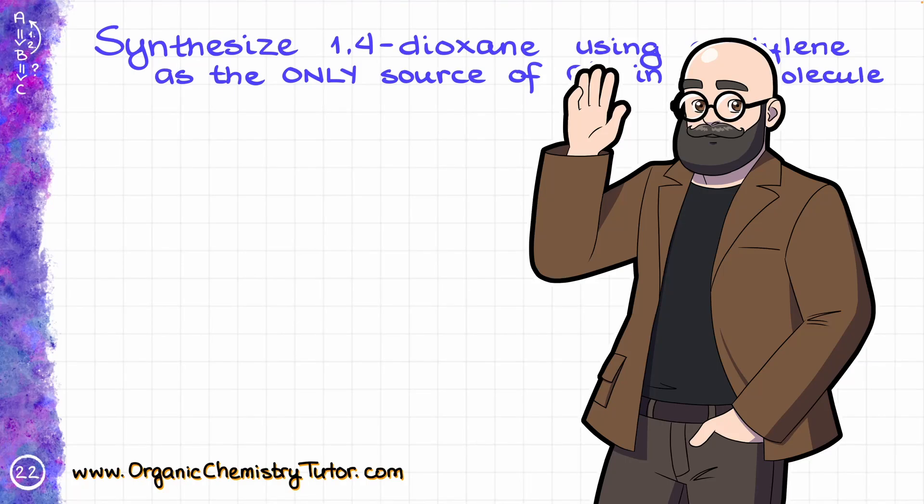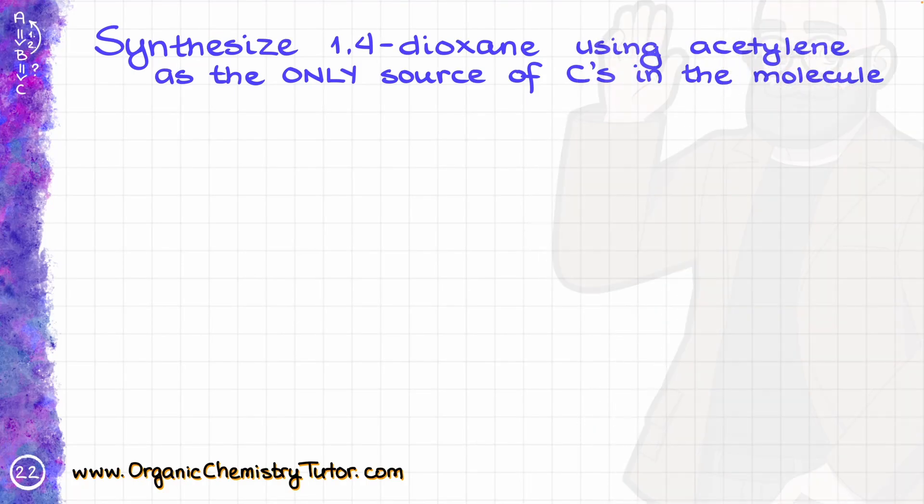Hello everyone, Victor is here, your organic chemistry tutor, and today I have a fun synthesis question for you. We need to synthesize 1,4-dioxane using acetylene as the only source of carbons in our molecule.